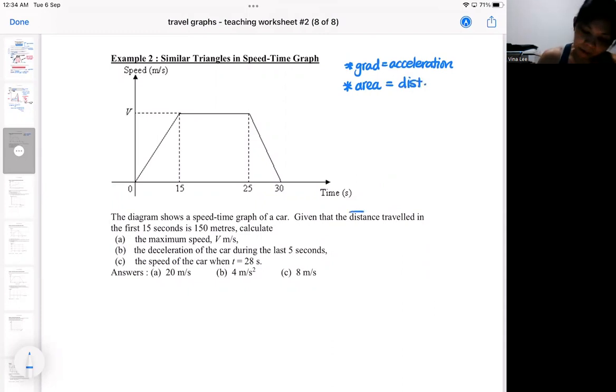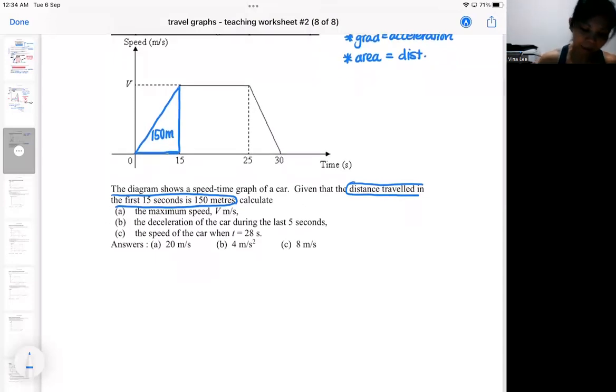So now I have the distance traveled in the first 15 seconds. If you look at the shape in the first 15 seconds, there is a triangle. So from here, I can actually find the maximum speed. That means the area of the triangle is 150. And if I do a half times base times height, I can find the maximum speed.